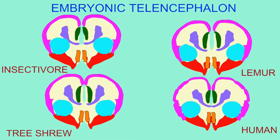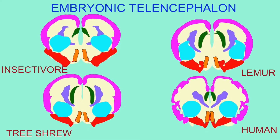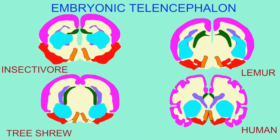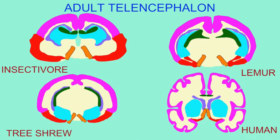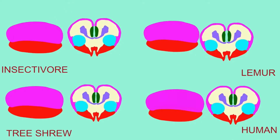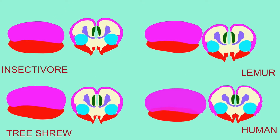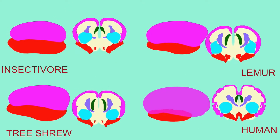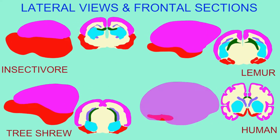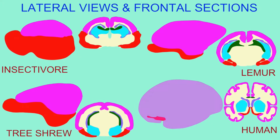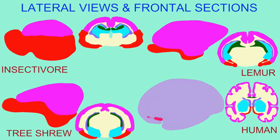In mammals, the size of the brain increased. The size of the cerebrum increased. The percentage of the cerebrum which was composed of the pink neocortex, or dorsal pallium, increased.